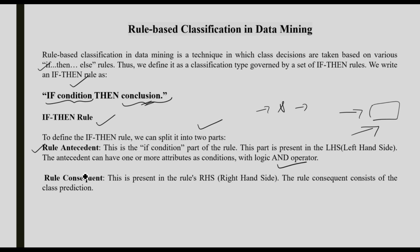The second part is the rule consequent. The rule consequent is present in the right-hand side (RHS) of the rule. The rule consequent consists of a class prediction — we are predicting a class. For example, whether we can play or cannot play — that class we can predict using rule-based classification.